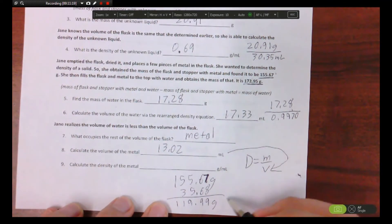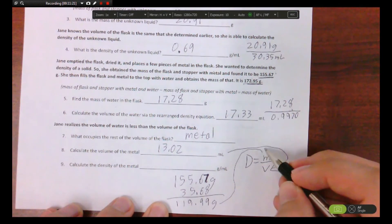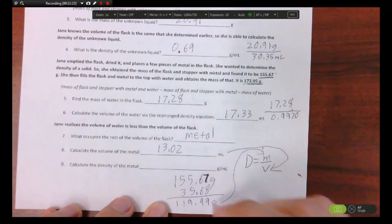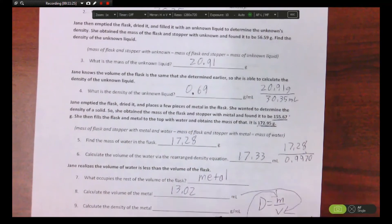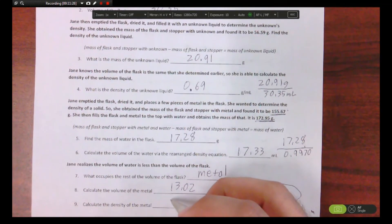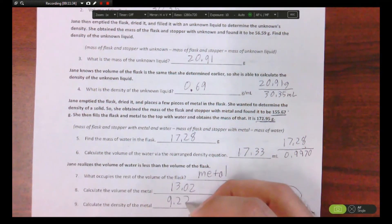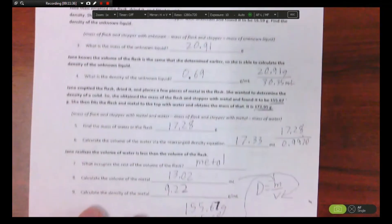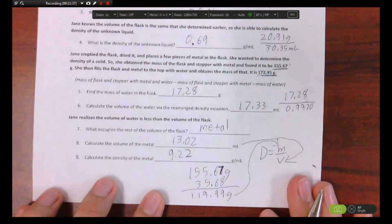So that is your mass of the metal. Then you take that value divided by that value, and you get, you got six? I got 9.22. My handwriting is horrible.